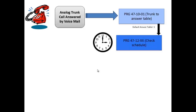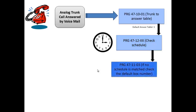If no scheduling match is found in program 4712, then the system looks at program 4711-03. This program is used to assign the default answering mailbox. For example, you would assign the default answering mailbox to be routing mailbox 2. Then any times not defined in program 4712 would get answered by routing mailbox 2. This would allow you to only assign the daytime patterns in program 4712, and any other times would fall to the default mailbox, becoming your night greeting.